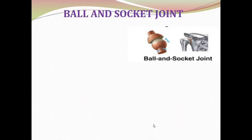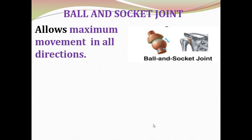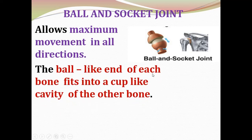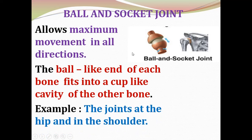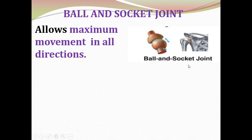Next is the ball and socket joint. It allows maximum movement in all directions. The ball-like end of one bone fits into a cup-like cavity of the other bone. Examples of ball and socket joints are the joints at the hip and the shoulder.